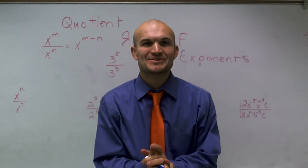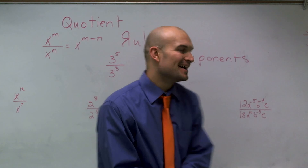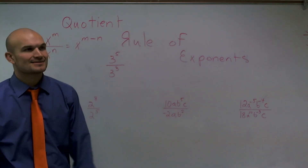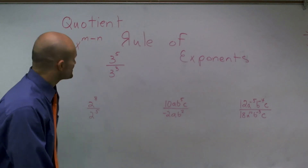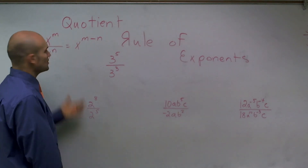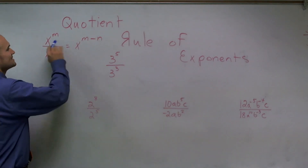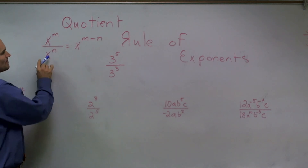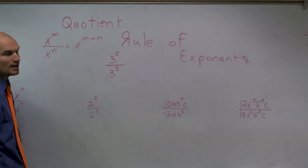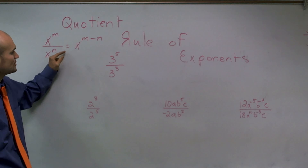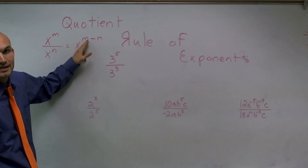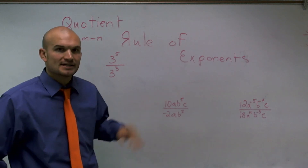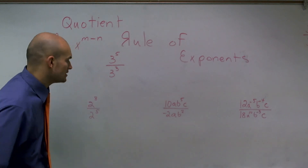Welcome, everybody. What I want to do is show you how to apply the quotient rule of exponents. The quotient rule of exponents simply states: if you have a number raised to an exponent and that is divided by that same number raised to an exponent, what you can do is subtract the exponents. Take your base and subtract the exponent.